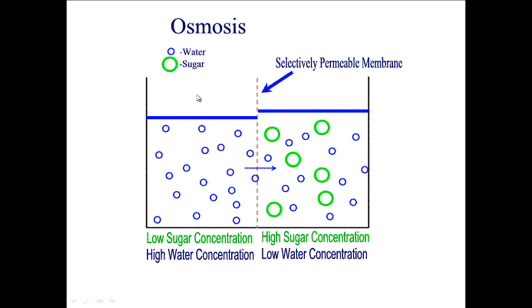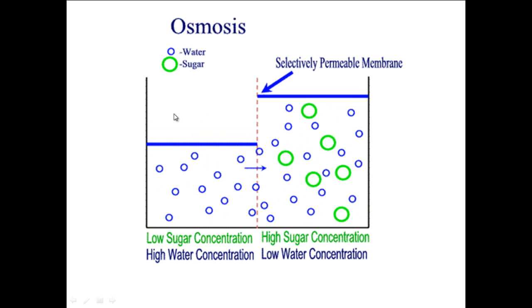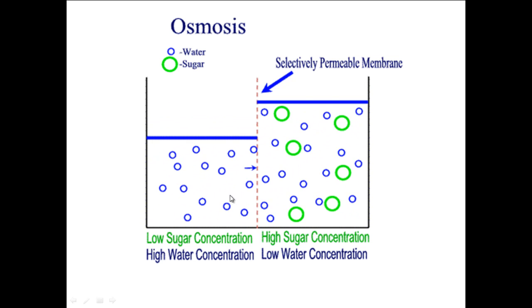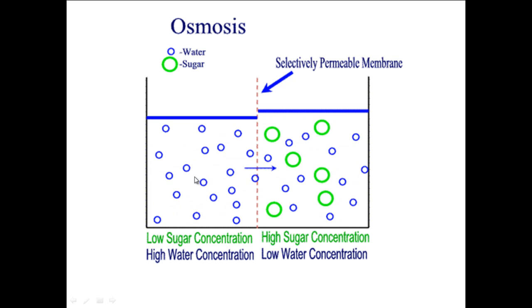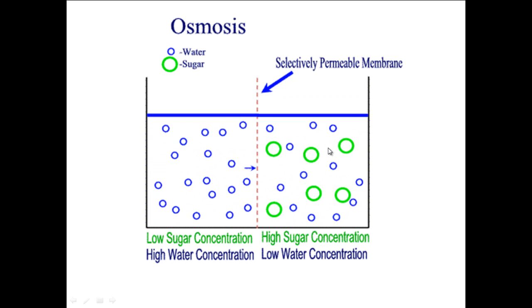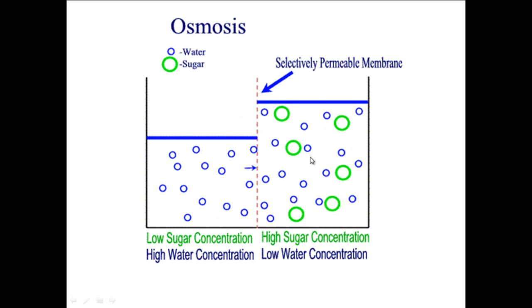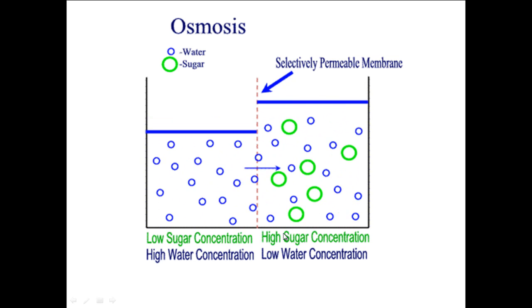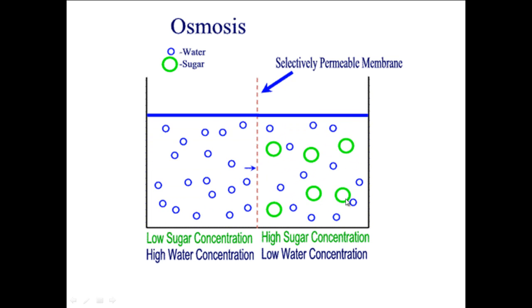Here you've got a diagram showing the net flow of water moving from left to right. The reason is that there's an area of high water concentration moving to an area of low water concentration, and the reason this area is lower is because there's a higher sugar concentration there.